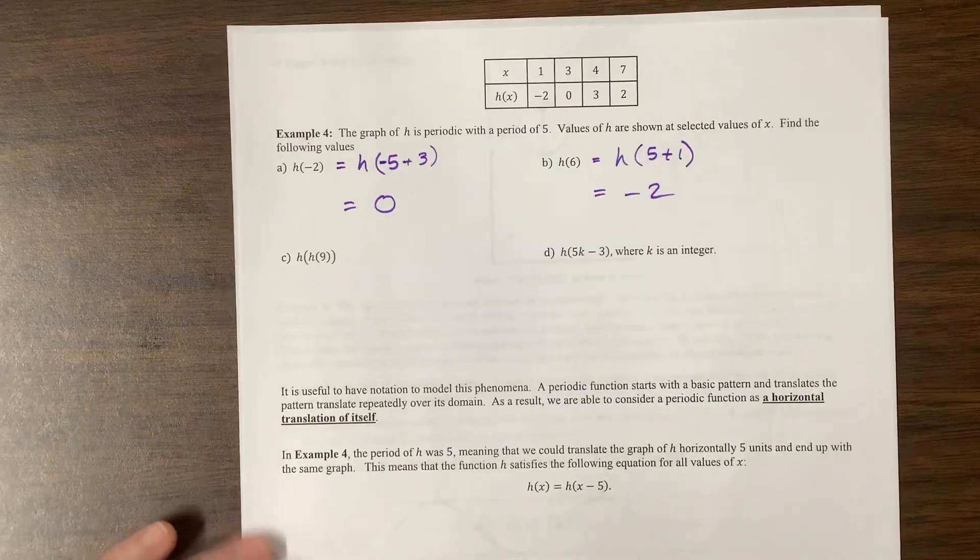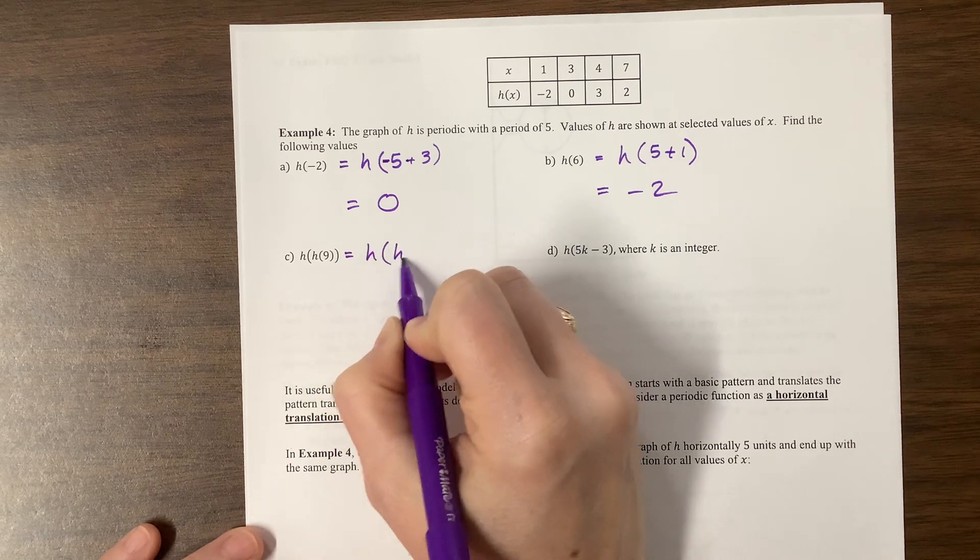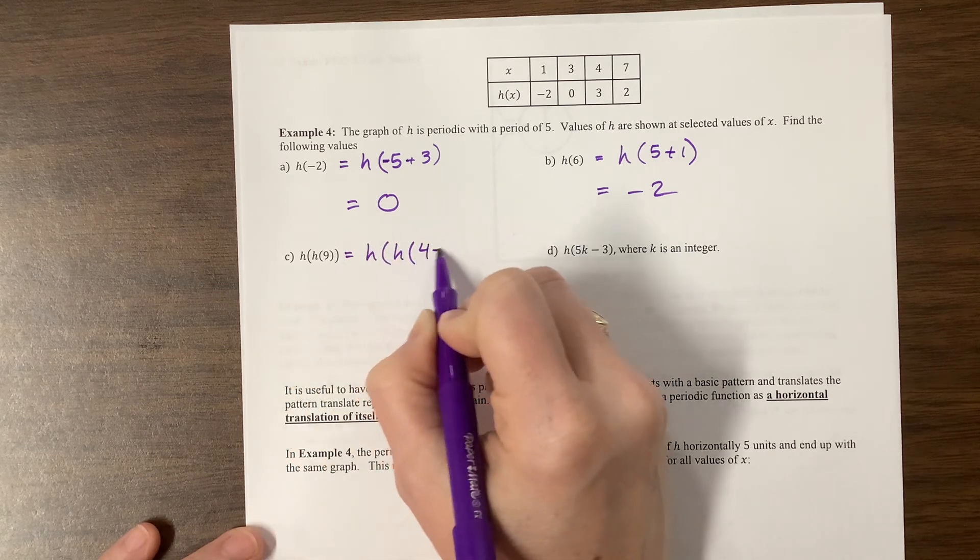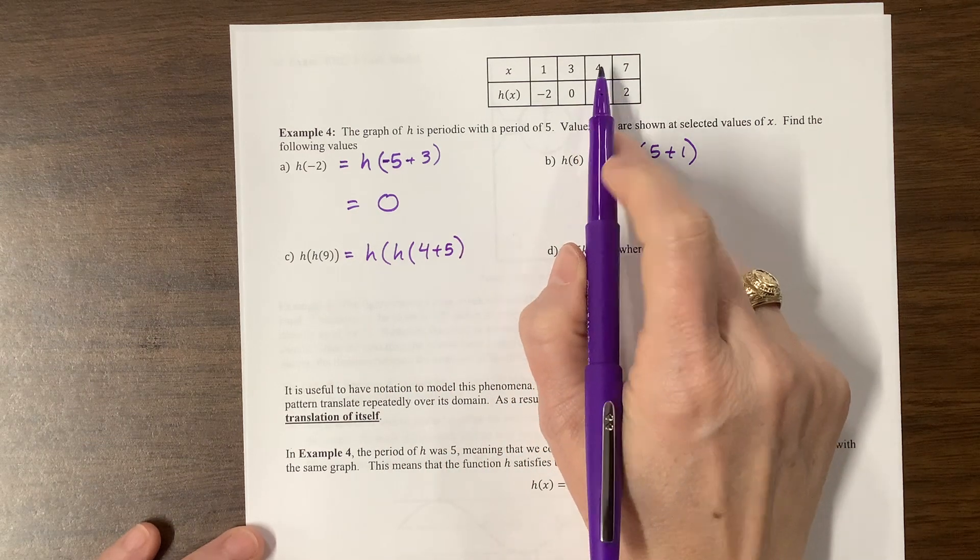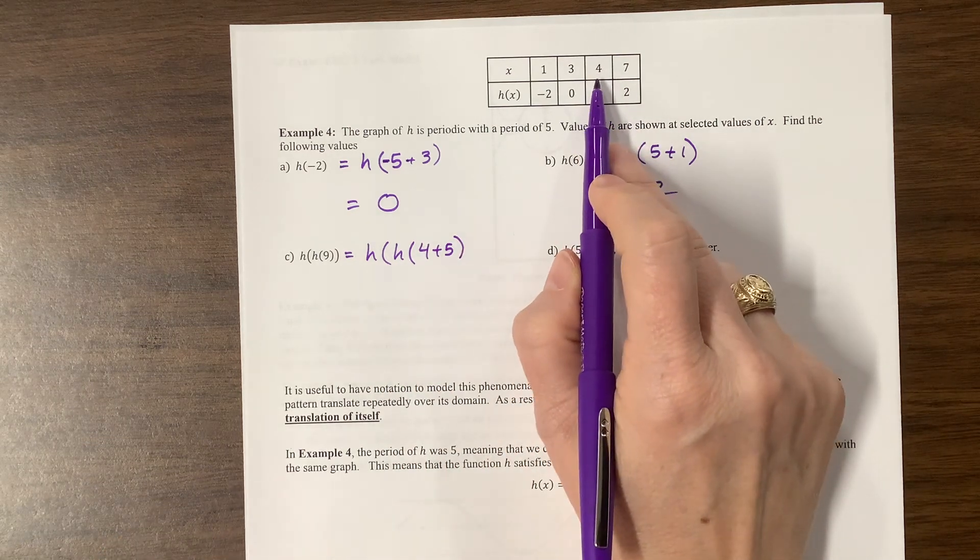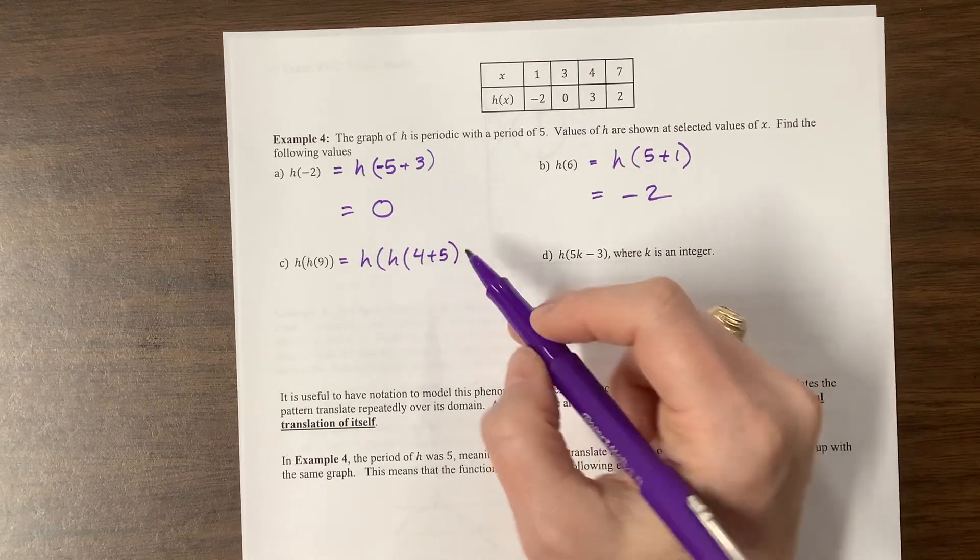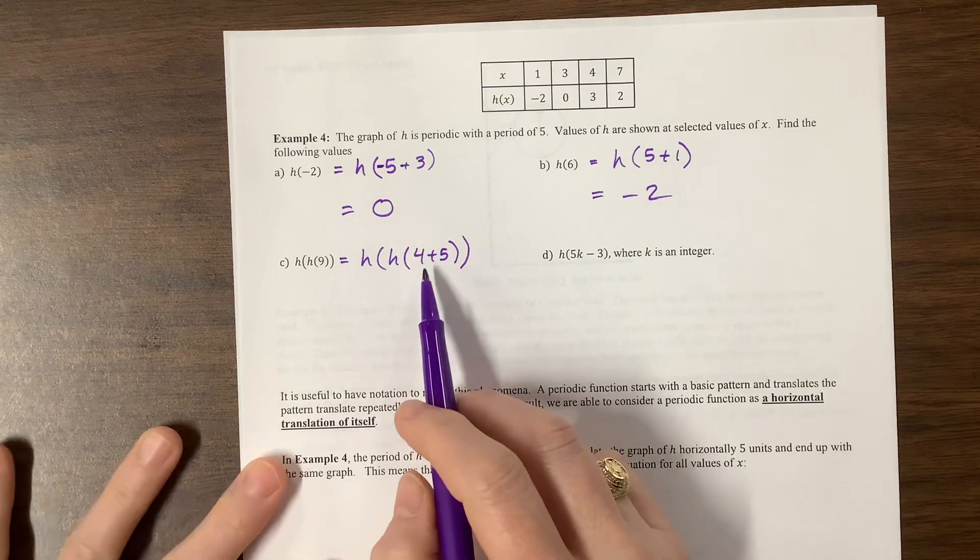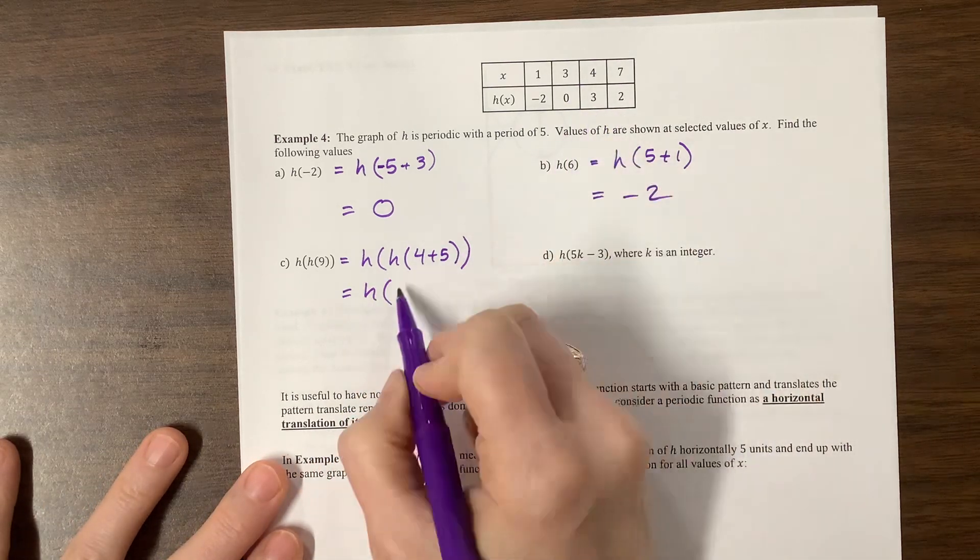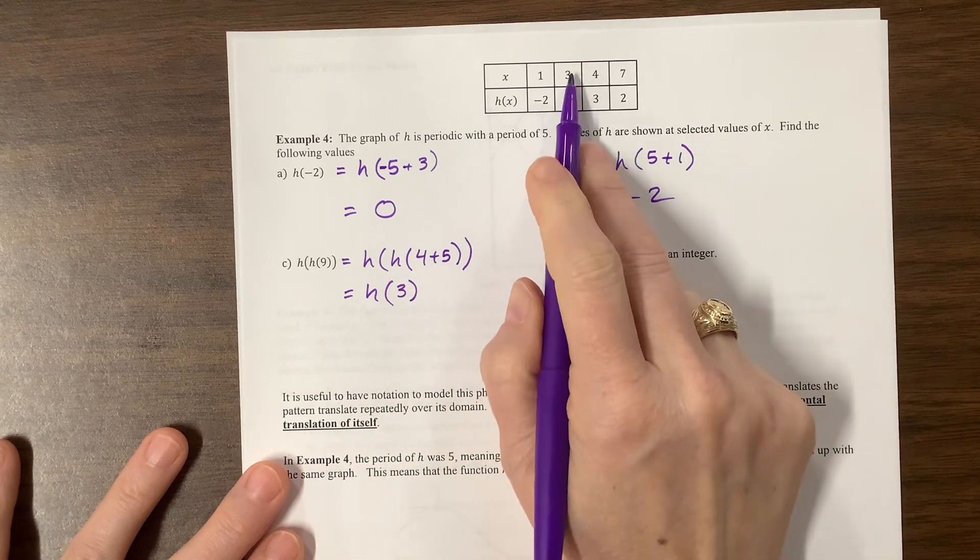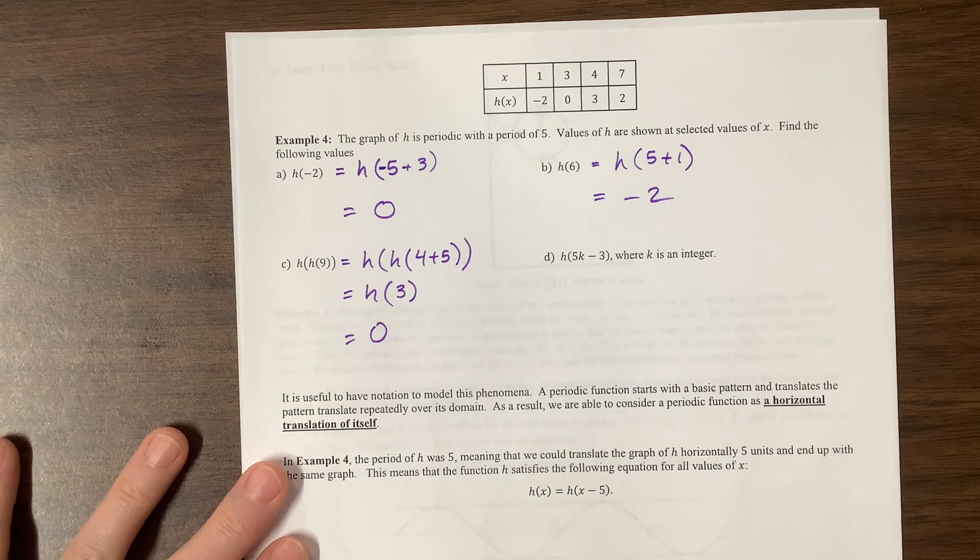I thought these next ones were kind of clever. So this would be equal to H of H of 4 plus 5. We do know what H of 4 is equal to. If it happens at 4, it happens one whole period later. So 5 units beyond 4 is 9. I need another parenthesis. So this is going to be equal to H of, what did we say this was? H of 4 was 3. Now we also know H of 3 is equal to 0. That was a cool problem. I liked it.